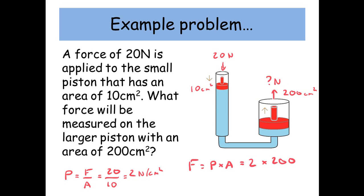Now, by rearranging our equation, we can find the force is equal to the pressure times the area. So it's going to be 2 times 200 centimeters squared. So we find that the pressure exerted on the larger piston is actually 400 newtons.